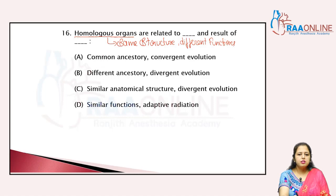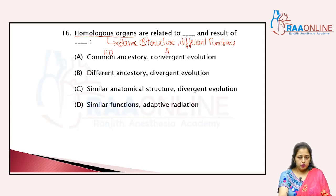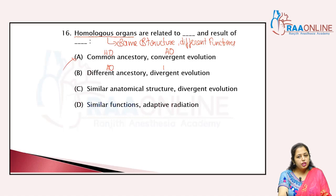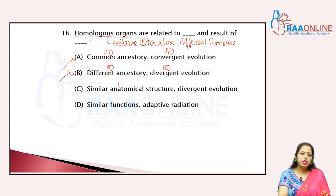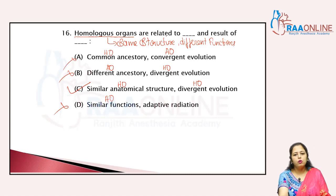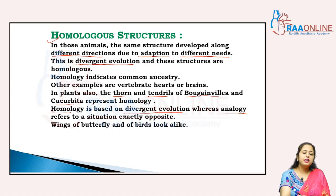Common ancestry is related with homologous organs, but convergent evolution is related with analogous organs. Different ancestry is related with analogous organs and divergent evolution is related with homologous organs. Similar anatomical structure is related with homologous organs and divergent evolution. So the correct answer is C.